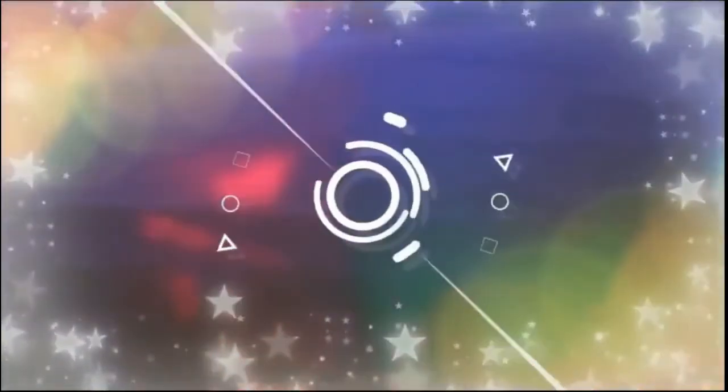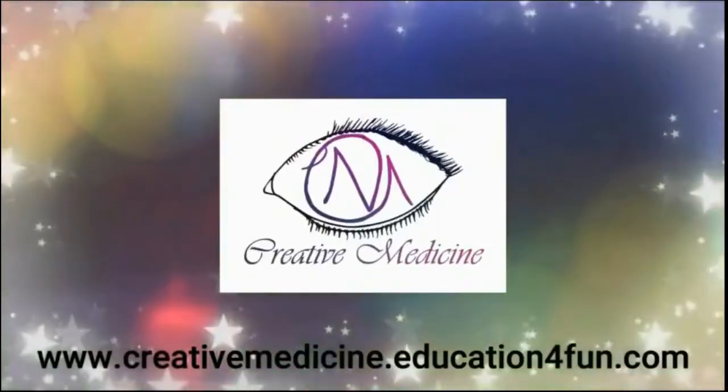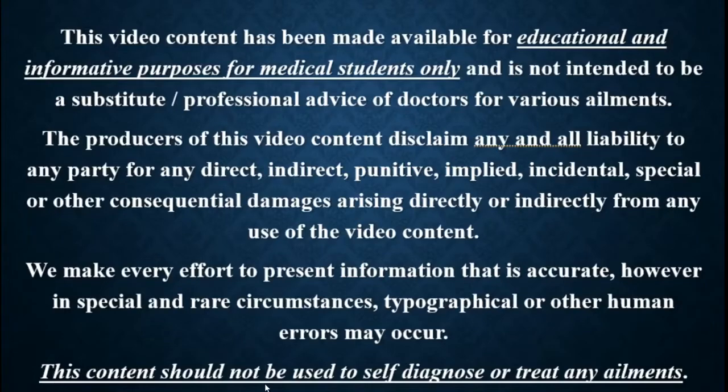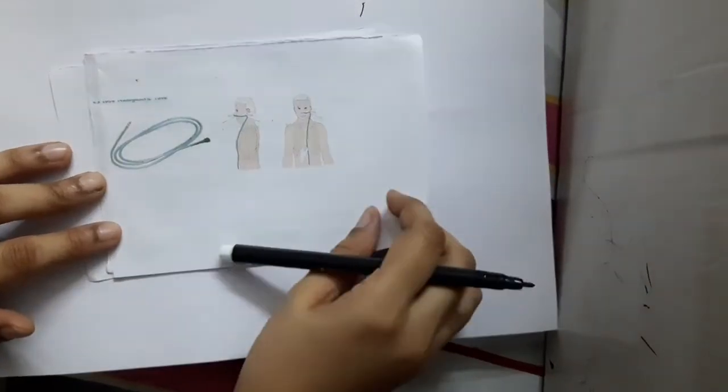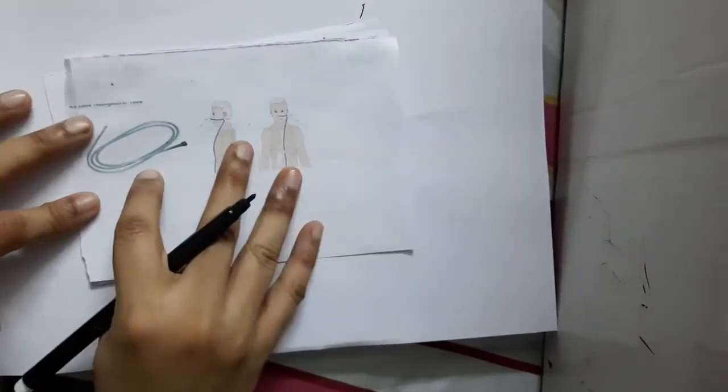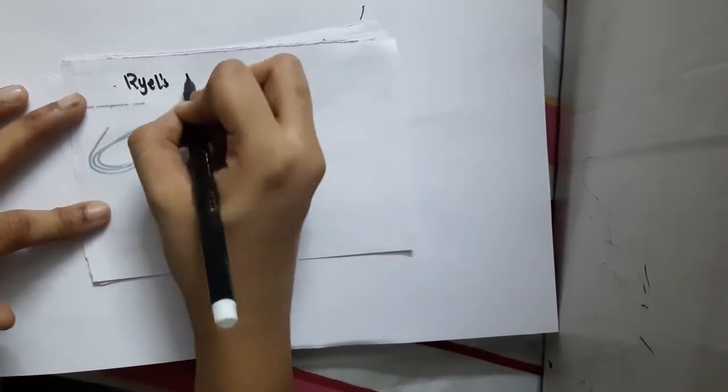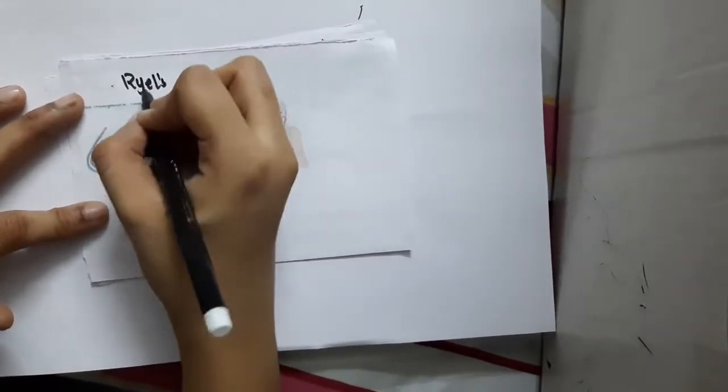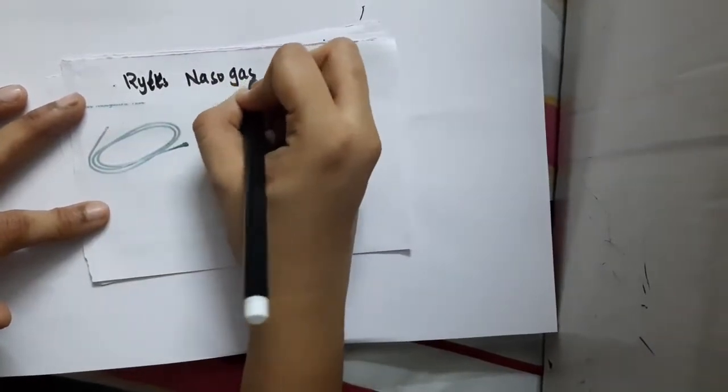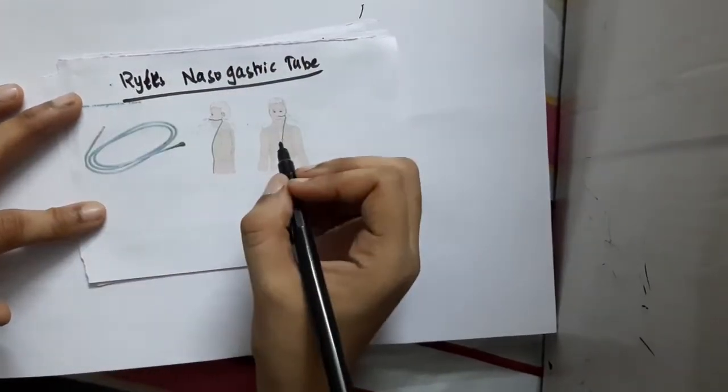Hello friends, welcome to Creative Medicine. In this lecture, we will learn about this instrument. Identify this instrument - this is a Ryle's tube, a Ryle's nasogastric tube. How are you going to measure it?